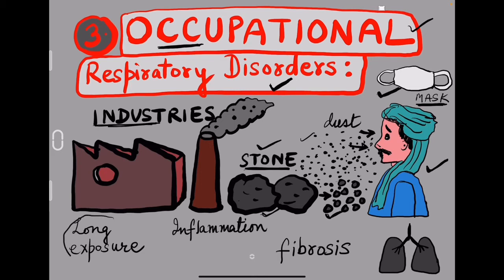Long exposure to dust, etc. — the body cannot cope with this. The defense mechanism fails here. This gives rise to inflammation of the passages leading to fibrosis, that is, an increase in the fibrous tissue of the respiratory system, causing serious lung damage.